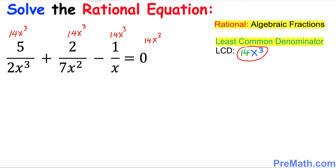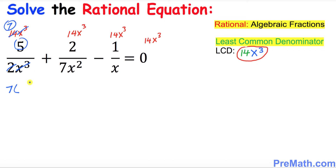Now let's simplify each term. For the first one: 2 divides into 14 seven times, and x³ divided by x³ cancels, so we simply get 7 times 5. Multiply those out.